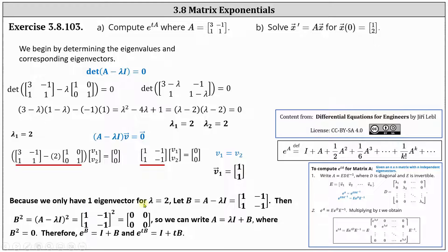Because we only have one eigenvector for lambda equals two, we let B equal A minus lambda I, which is the two by two matrix with entries one, negative one, one, negative one. What's special about matrix B is that B squared is equal to the zero matrix. So we write A equals lambda I plus B, where B squared equals zero, and therefore the matrix exponential e to the B equals just I plus B.